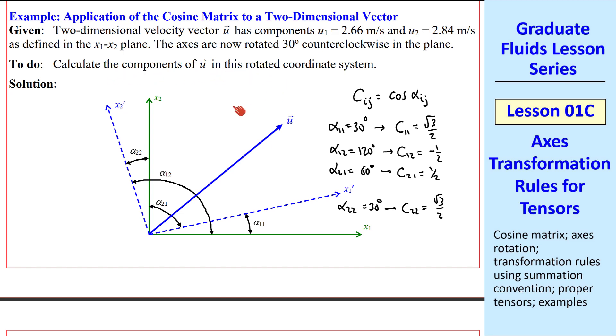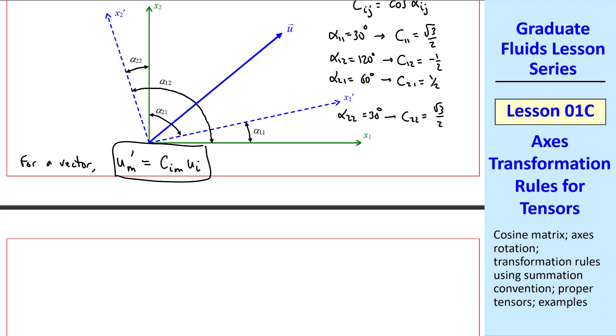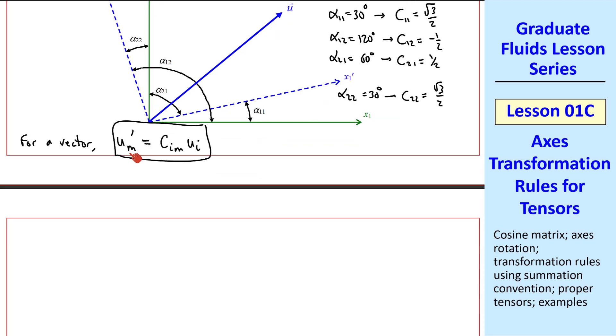To calculate the components of u prime in this rotated coordinate system, since we're talking about a vector, the equation is u'_m = c_im u_i. I'll discuss this more formally in a minute. For now, let's just use this equation to calculate these components. Note here that m is a free index, it's not repeated, whereas i is repeated. So for m equal 1, 2, or 3, we have to sum over the i's. So u'1 is c11 u1 plus c21 u2 plus c31 u3. Notice that I've kept m equal to 1, but I've summed i equal 1 to 3.